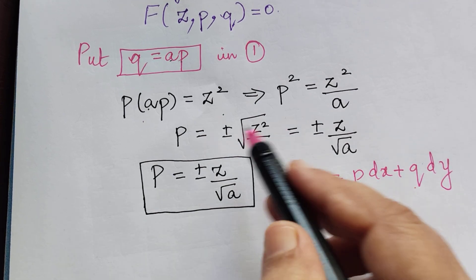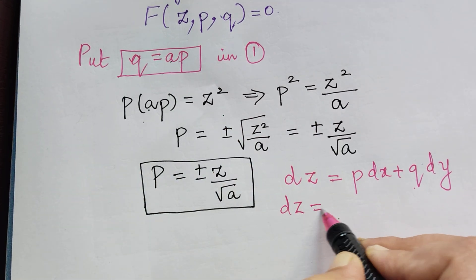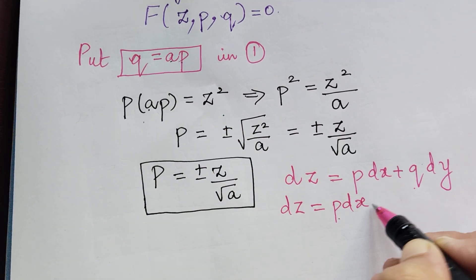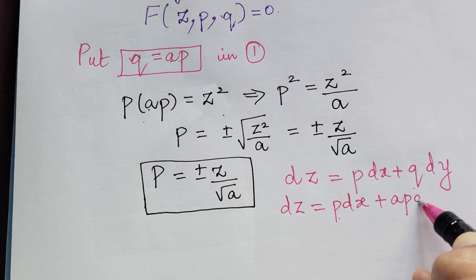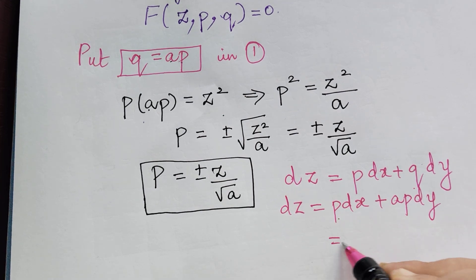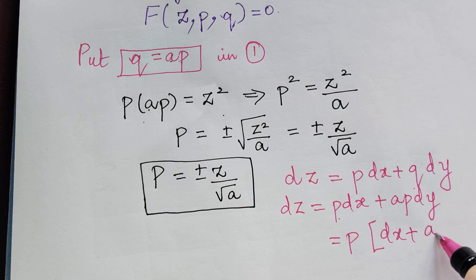We know that Q = AP. When we replace it, dZ = P dx + AP dy. On the right, P is common, so we have P(dx + A dy).